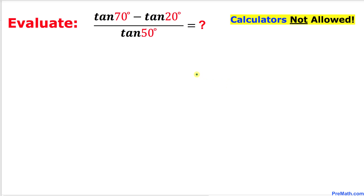Welcome to pre-math. In this video tutorial, we are going to find the value of this given rational expression: tangent of 70 degrees minus tangent of 20 degrees, divided by tangent of 50 degrees. Moreover, we are not supposed to use calculators of any kind, so let's go ahead and get started with the solution.